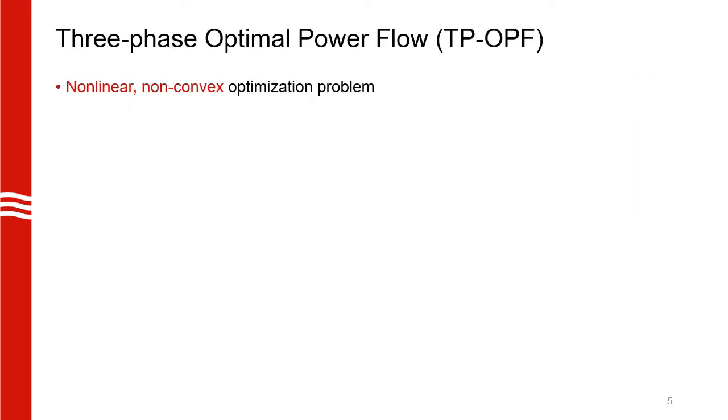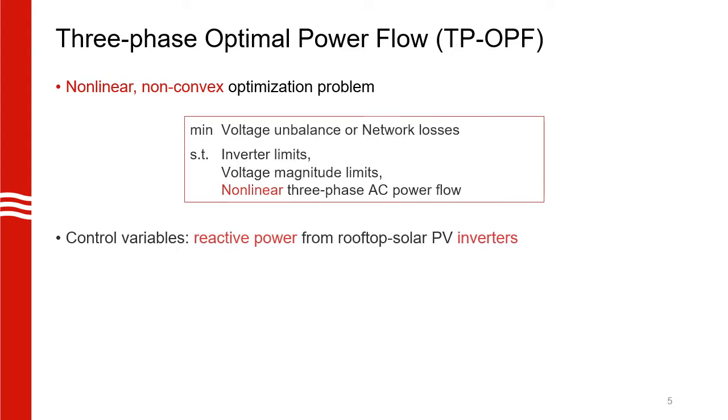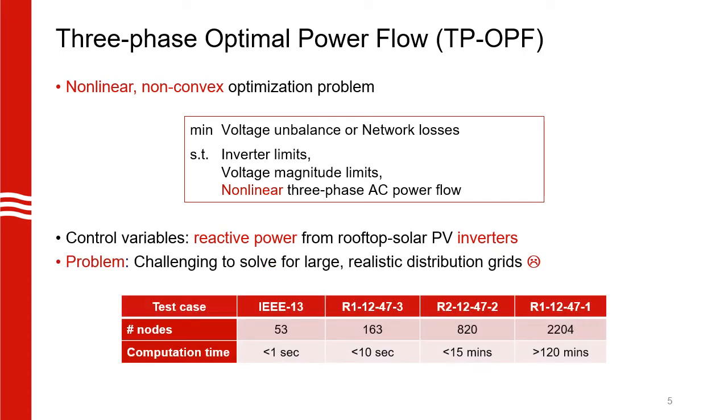So, the next question is, how do we find the optimal reactive power injections? For this, we need to solve a three phase optimal power flow problem as shown here. Our objective can be to minimize either voltage unbalance or losses in the network, subject to various engineering constraints. However, this problem is challenging to solve for large systems, especially due to the non-linear nature of the power flow equations. As you can see from the table here, for a system with around 2200 nodes, it can take more than two hours to converge to a solution.